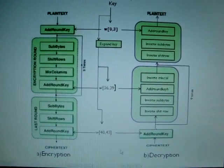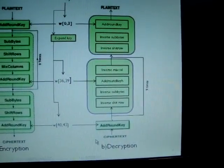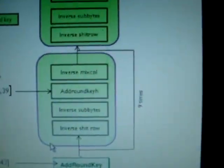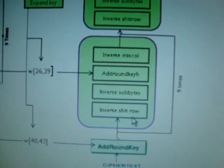This is the AES architecture. If you see, the plaintext and the key are given to the AddRoundKey. It performs SubBytes, ShiftRows, MixColumns, and AddRoundKey for 9 times.